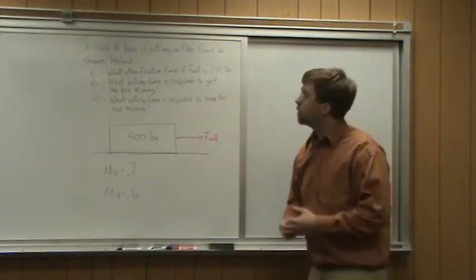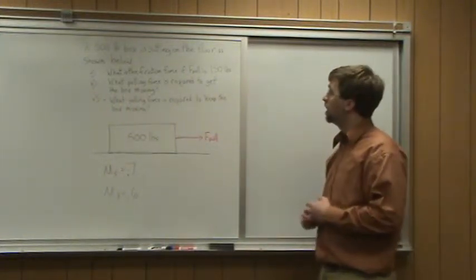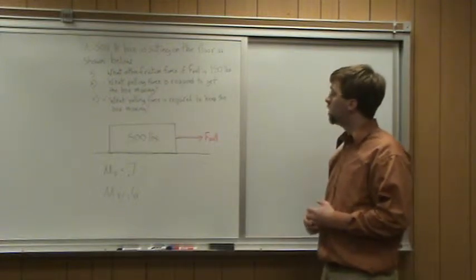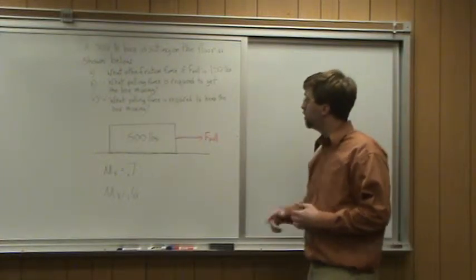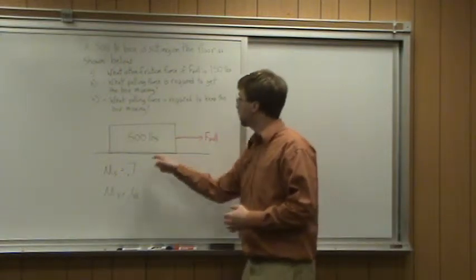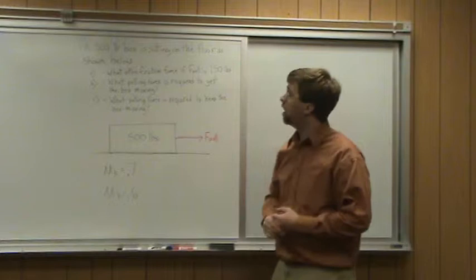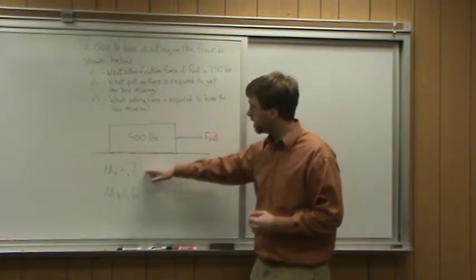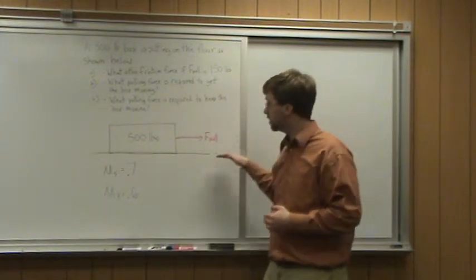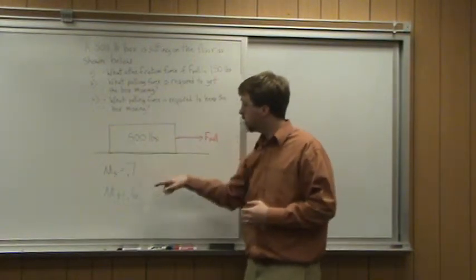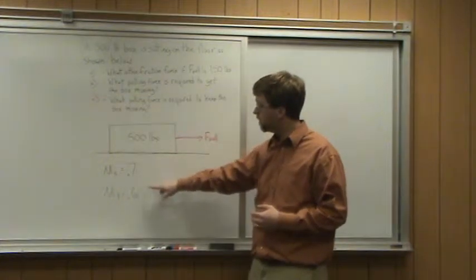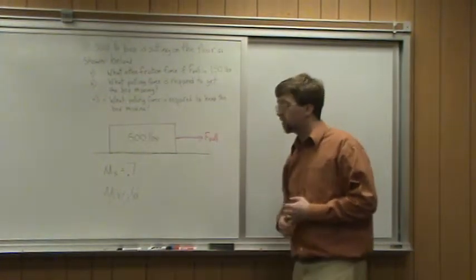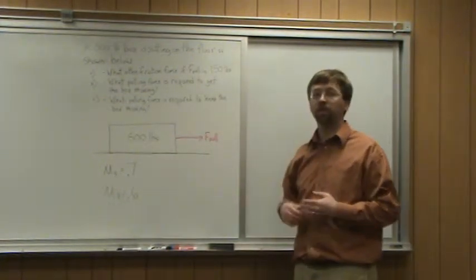Hello. For this worked example, we've got a 500 pound box sitting on the floor as shown below. We know that the static coefficient of friction between this box and the surface it's sitting on is 0.7, and the kinetic coefficient of friction between the box and the surface is 0.6.